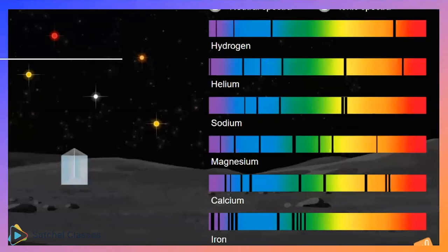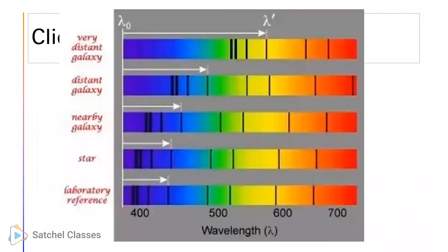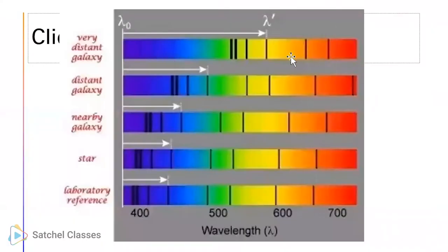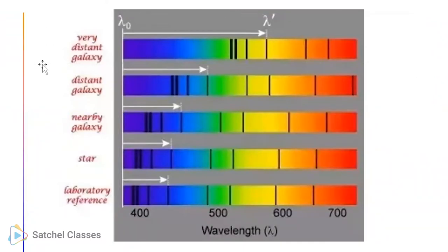We're going to look at this one first. We use a prism to split light from different stars. Have you ever used a prism to split light? You'll find out that you get a rainbow - a spectrum. That's the scientific name for a rainbow. So look at the rainbow bit for a minute.